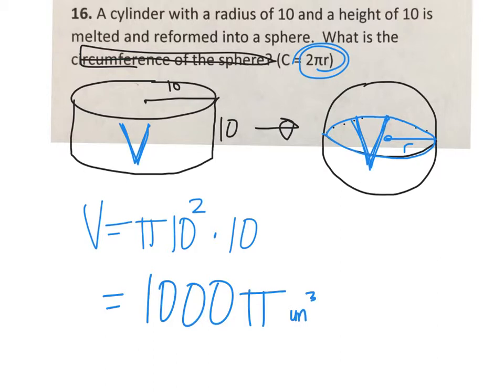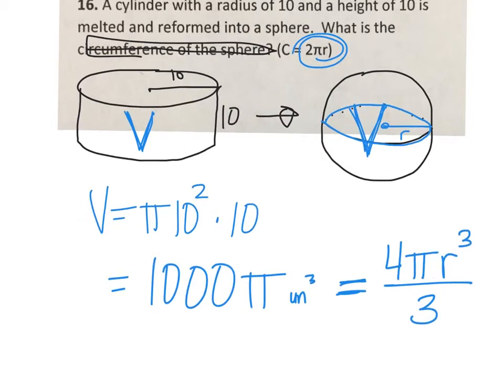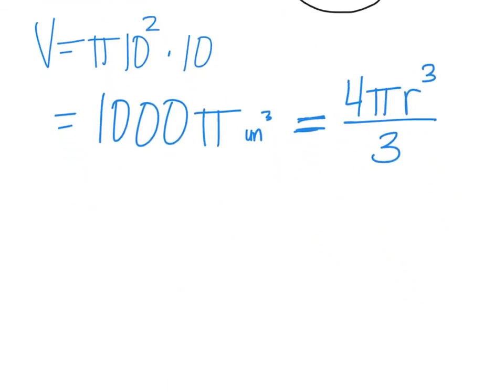So that means that the volume of my sphere is also 1,000π. Now I want to set it equal to the volume formula for my sphere, which is 4πr³ divided by 3. So we find the volume for the cylinder and set it equal to the volume for a sphere.